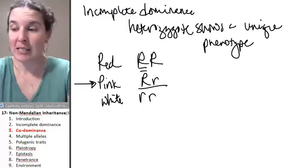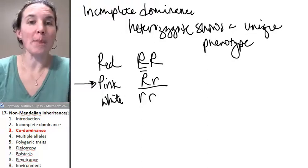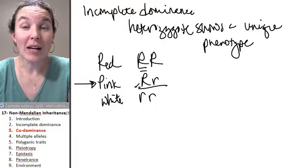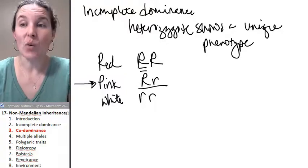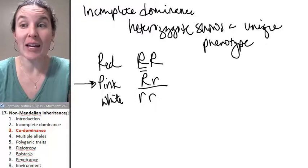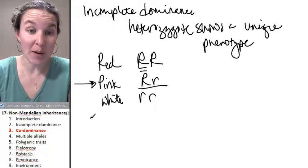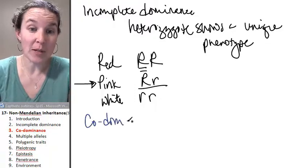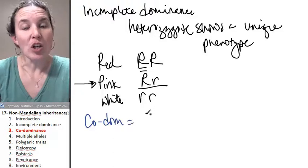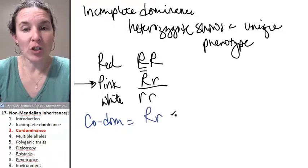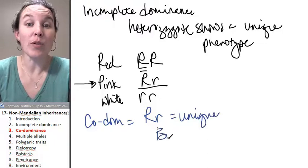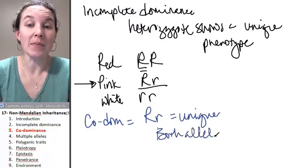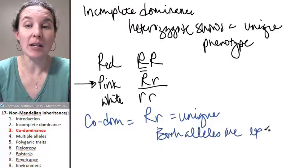Now codominance is a situation where both alleles are expressed fully. So in the heterozygote, again, you have a unique phenotype. So codominance, you have a unique phenotype, but both alleles are expressed.